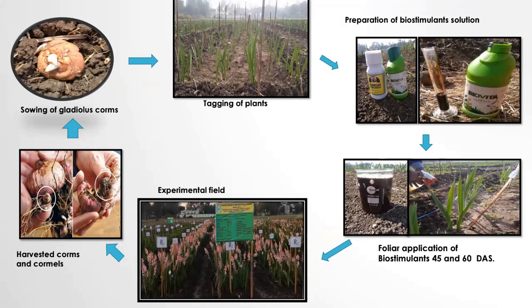Foliar application of biostimulants was done at 40 and 60 days after sowing. This is the experimental field. When the lower one to two florets turned color, the spikes were harvested and recorded for flower parameters. When the foliage turned yellow, the corms were harvested and used for recording observations.